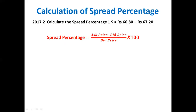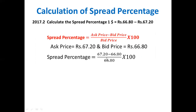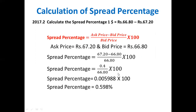Applying the spread percentage formula with ask price 67.20 and bid price 66.80, the spread percentage works out to 0.598 percent. This covers the calculation of spread percentage — finding the banker's benefit from the difference between the ask price and bid price. Thank you.